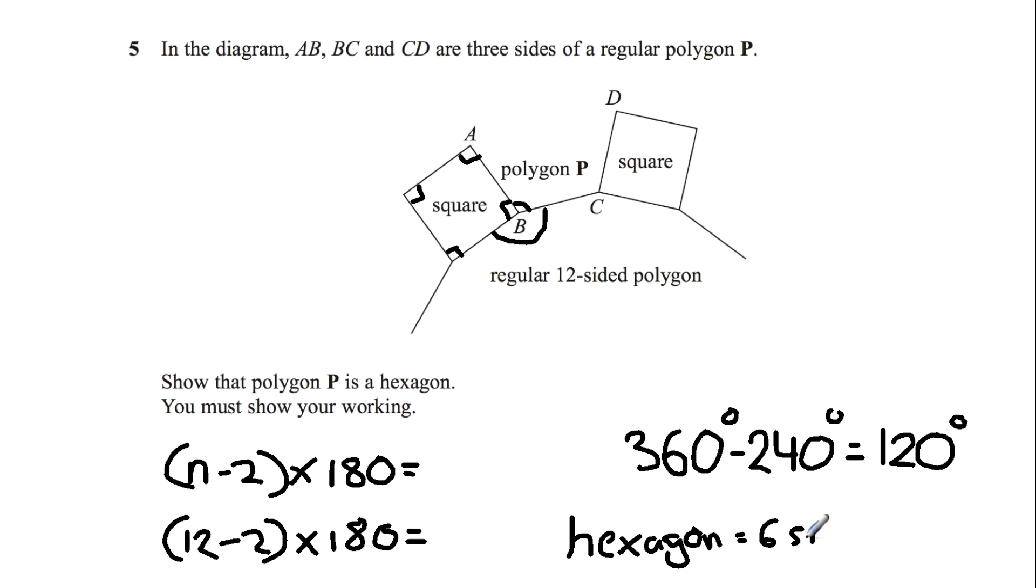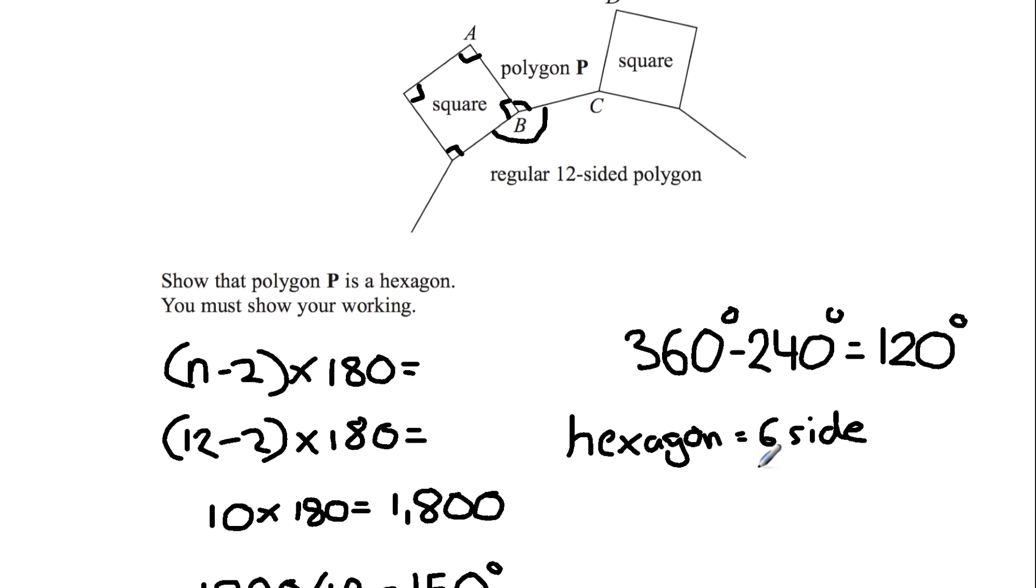So again what we're going to be doing is using the sum interior angle of a polygon equation. So it's 6 minus 2 times it by 180, which equals 720 degrees.